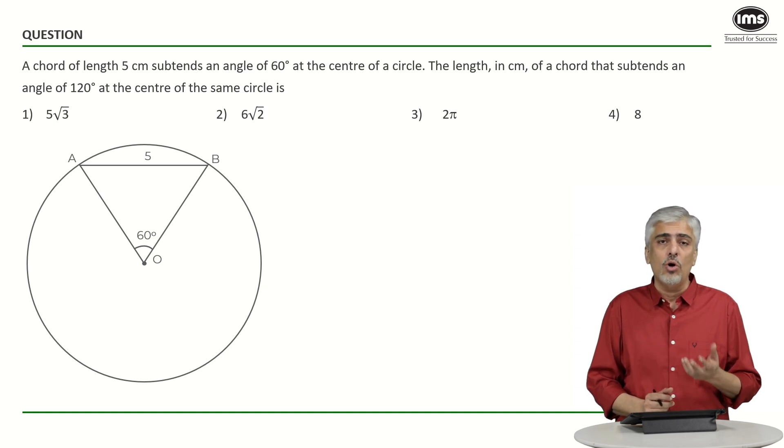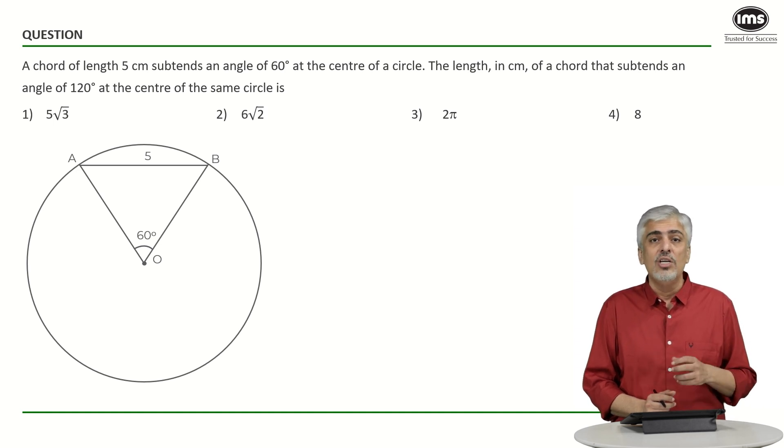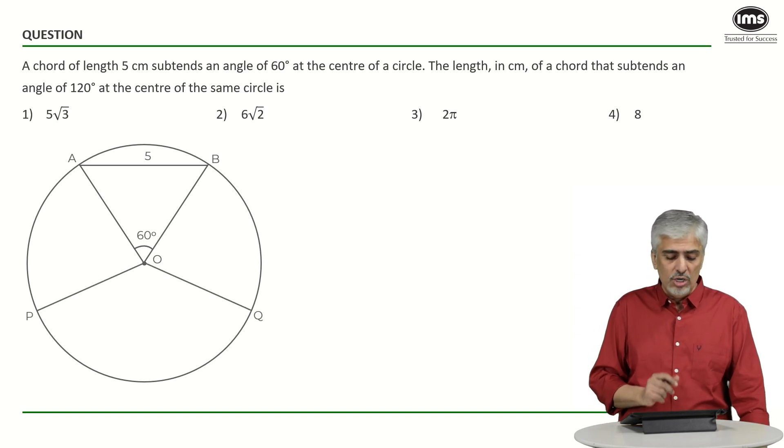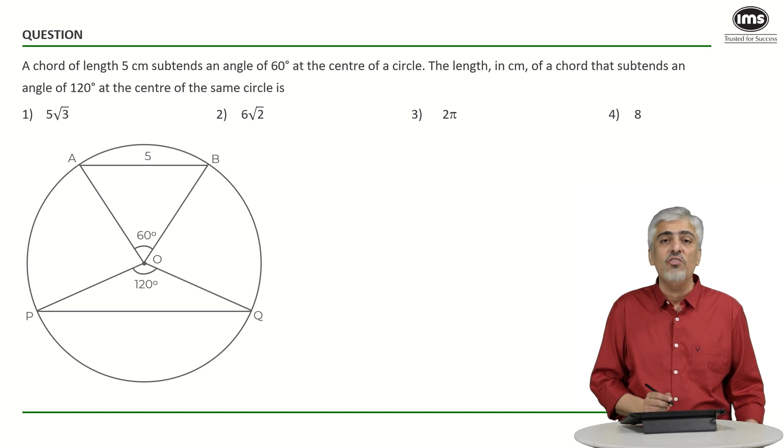Now that chord could be on the same side of AB, same side of the center as AB or on the opposite side, that will not matter to us. So obviously, don't complicate your diagram. I've just drawn the other chord PQ on the other side. So PQ is the second chord and angle POQ is given as 120 degrees. We need to find the length of PQ.